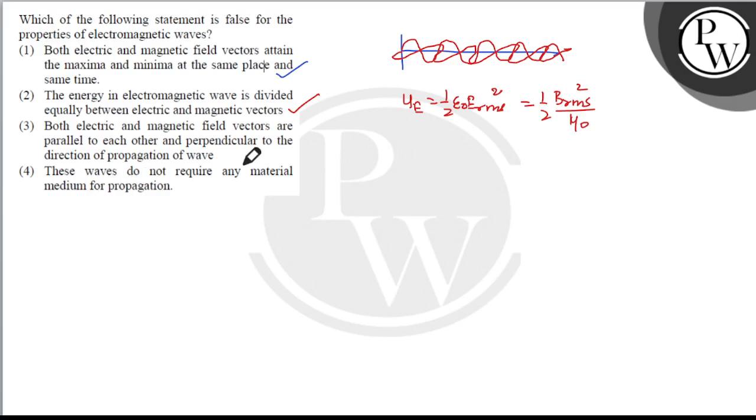Both electric and magnetic field vectors are parallel to each other and perpendicular to the direction of propagation of wave. This statement is completely wrong because electric and magnetic components are perpendicular to each other as well as perpendicular to the direction of propagation of wave.